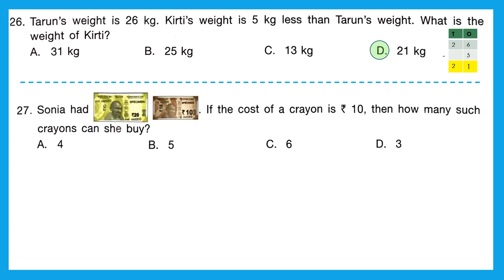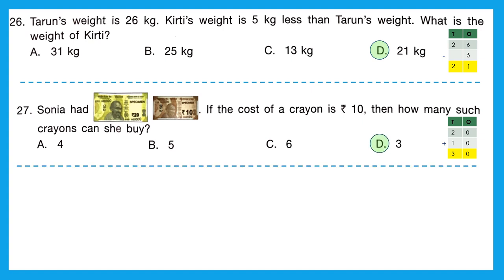Question 27: Sonia has a 20 rupee note and a 10 rupee note, so in total she has 30 rupees. That is 3 tens. If one crayon costs 10 rupees, she can buy 3 crayons with 3 tens. The right answer is option D, 3.